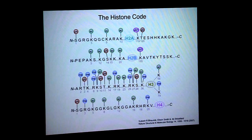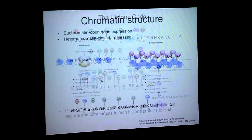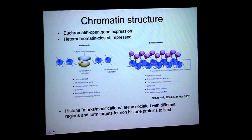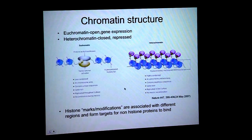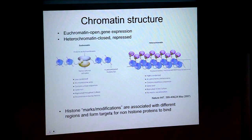This generally leads to two major states: euchromatin and heterochromatin. Euchromatin is the open state with more gene expression — nucleosomes are spaced further apart, less condensation, and more acetylation of histone tails. In heterochromatin, you have denser nucleosomes, more methylation, and binding of proteins involved in repression of gene expression. These histone marks form docking sites for non-histone proteins to bind and regulate gene expression.